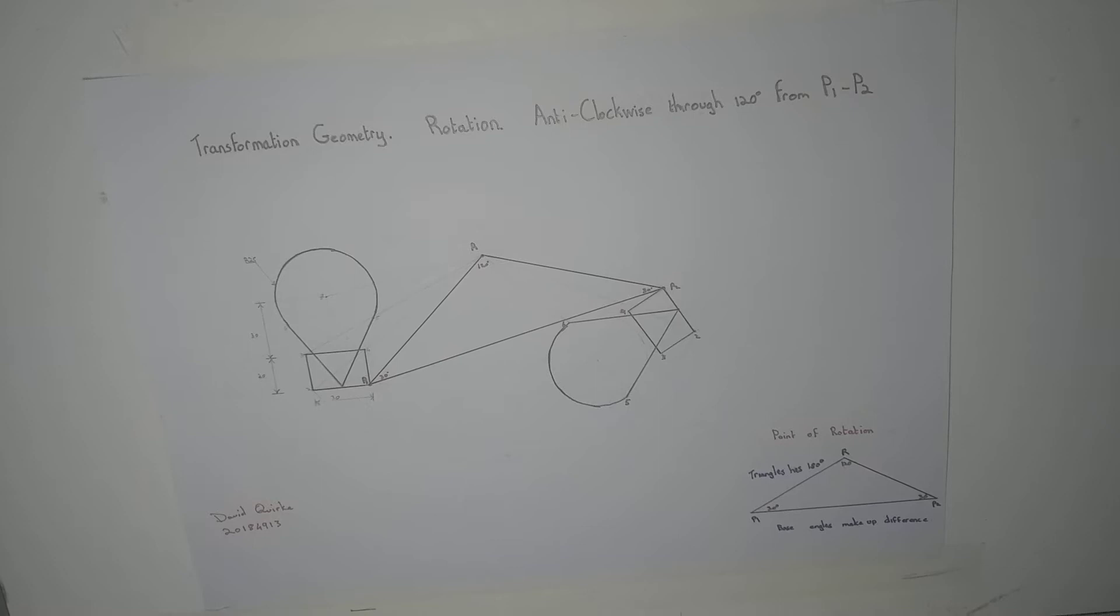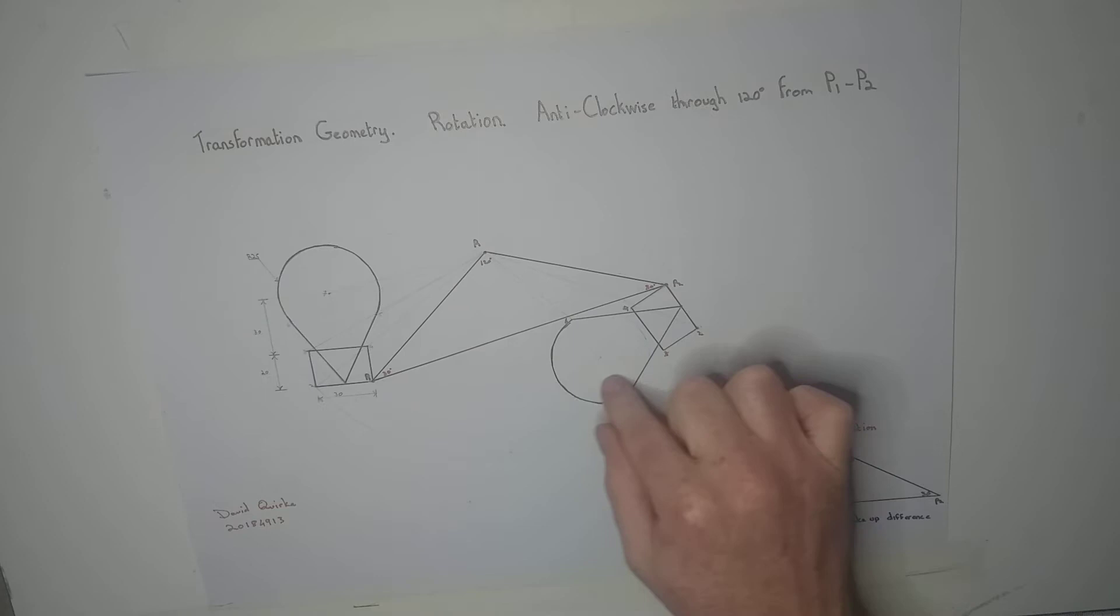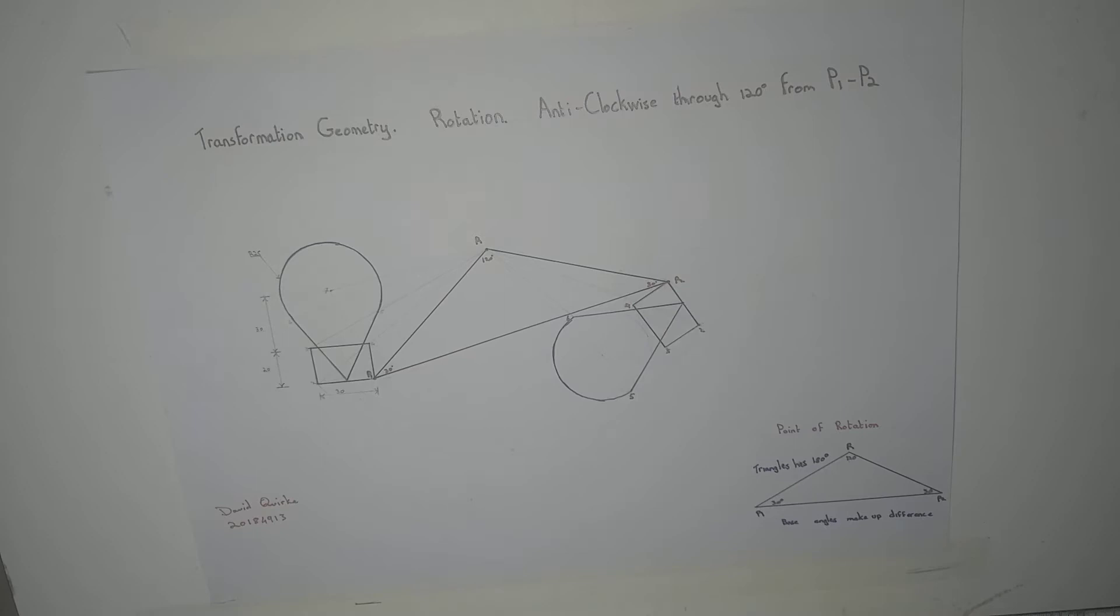Transformation geometry. Rotation. I want to transform this object anticlockwise through point P1 to point P2, 120 degrees anticlockwise.